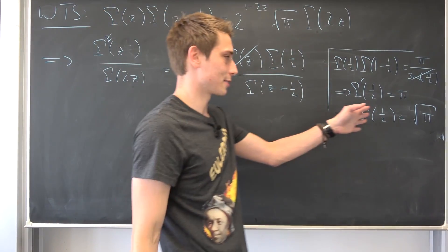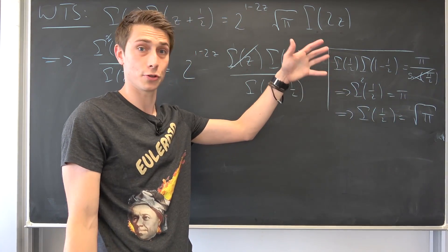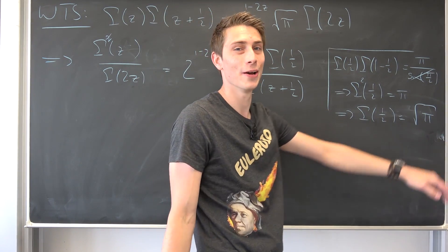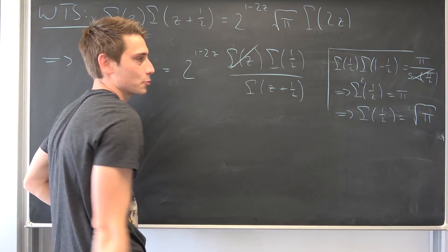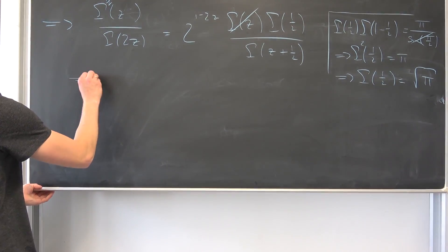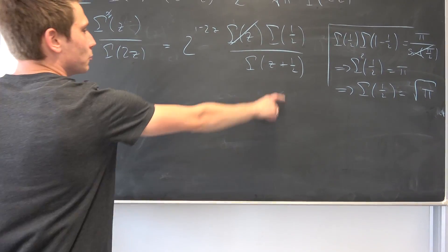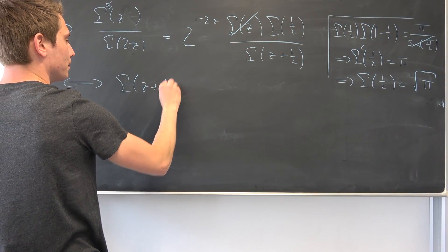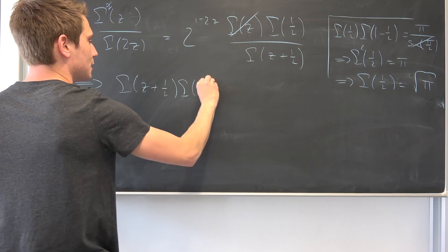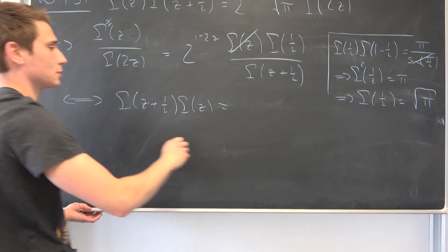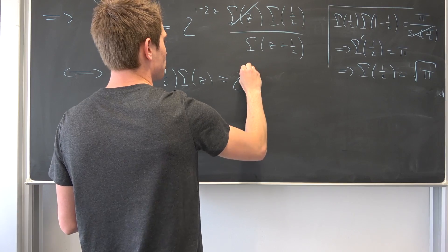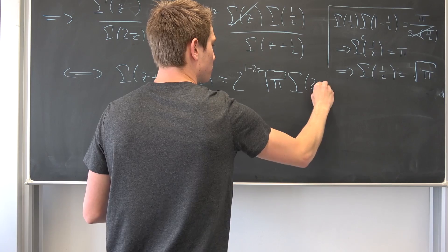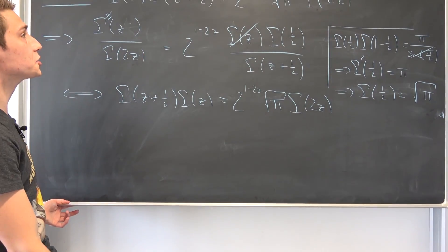This is the easiest proof that the Gaussian integral goes to square root of pi. Rearranging, multiplying both sides by Gamma of 2z, we get: Gamma of z plus one-half times Gamma of z equals 2 to the 1 minus 2z power times square root of pi times Gamma of 2z. And that's the Legendre duplication formula.